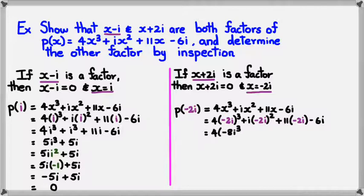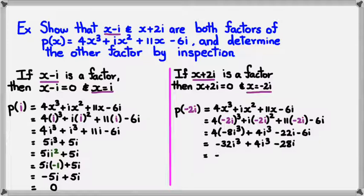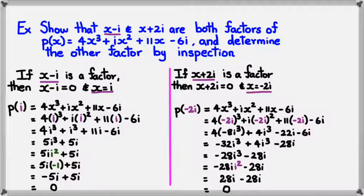Simplifying this, I'm going to get 4 times negative 8i cubed plus i times 4i cubed minus 22i and minus 6i. Simplifying this, I'm going to get negative 32i cubed plus 4i cubed minus 28i. Simplifying this further, I've got minus 28i cubed minus 28i. You can see that you're ending up with the same situation as you did in the left-hand side. You've got i cubed, so you can replace it with i squared. Simplifying it, I'm going to get 28i minus 28i, which equals 0.